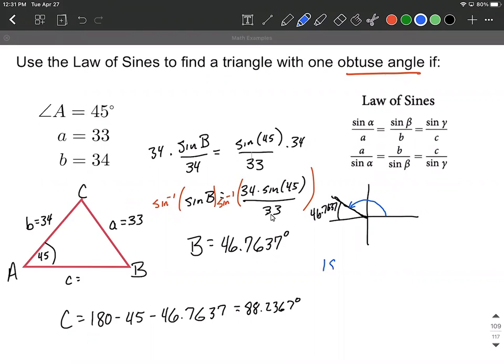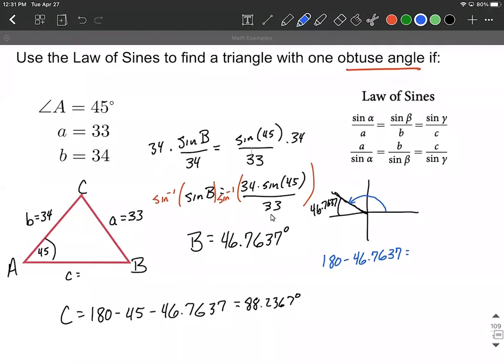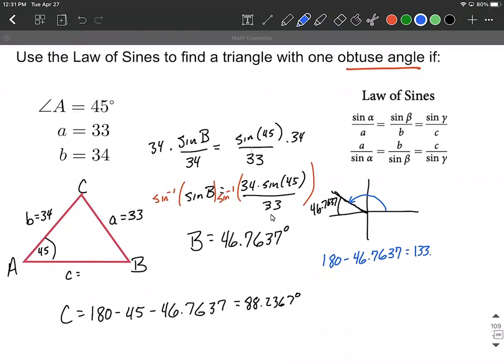So that angle, the computation would be 180 degrees minus 46.7637 degrees, which turns out being 133.2363. All right, which will be an obtuse angle. So we're going to use that for our B. So 133.2363, and I'm keeping quite a few decimal places I realize on this, but that's okay.